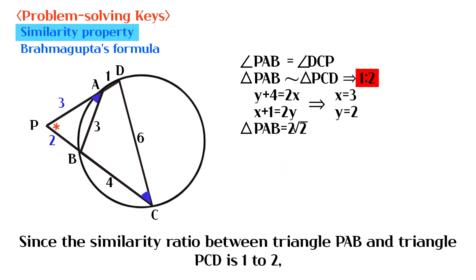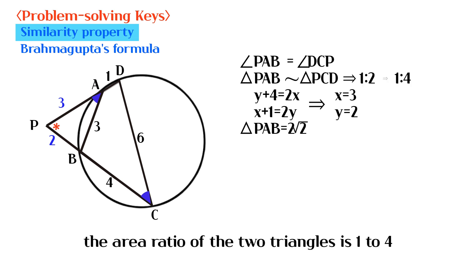Since the similarity ratio between triangle PAB and triangle PCD is 1 to 2, the area ratio of the two triangles is 1 to 4. So the area of triangle PCD is 8 square root of 2.